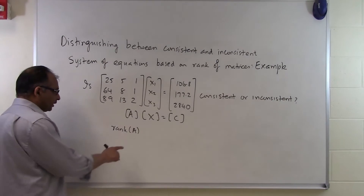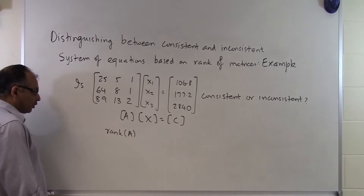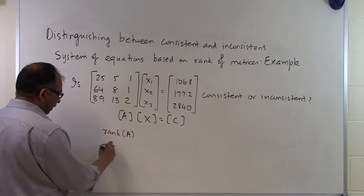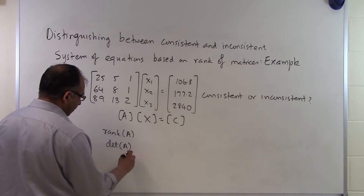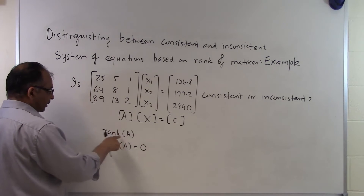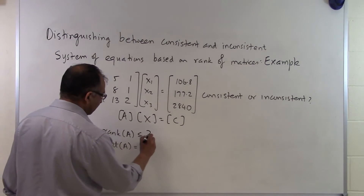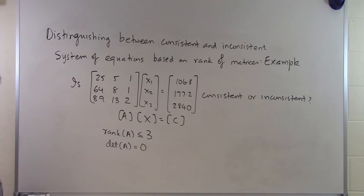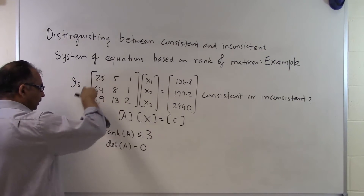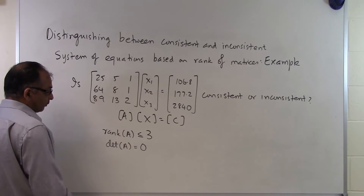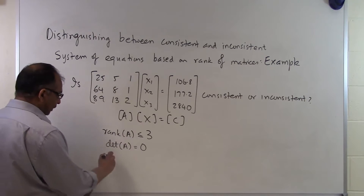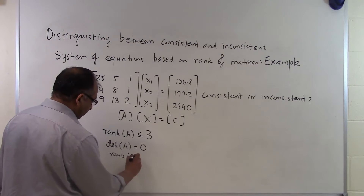In order to find the rank of A, I have to look for the largest order of square sub-matrices. This is a 3 by 3 matrix, so the largest square sub-matrix is the matrix itself, and the determinant of A is 0. So the rank of A is less than or equal to 3. Since the determinant of A equals 0, the rank of the A matrix cannot be 3, because there are no other 3 by 3 sub-matrices from this 3 by 3 matrix. So we know the rank of A is less than or equal to 2.